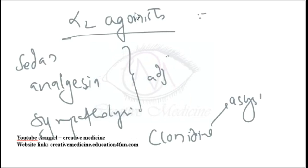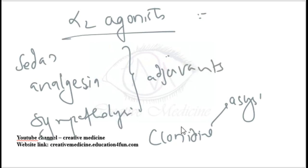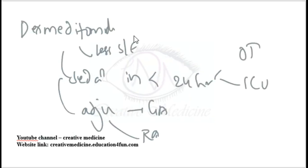Alpha-2 agonists summary: Alpha-2 agonists are intravenous agents that cause sedation, mild analgesia, and sympatholysis, so they are used only as an adjuvant. Clonidine causes bradycardia and is used in asystole. Dexmedetomidine has lesser side effects, is used for sedation in less than 24 hours, and can be used in OT and ICUs as an adjuvant in general anesthesia and regional anesthesia.